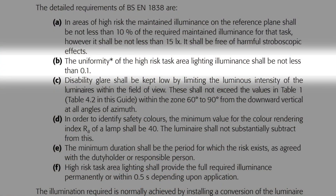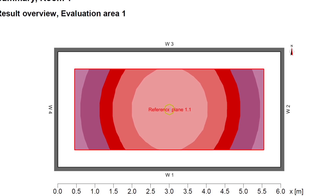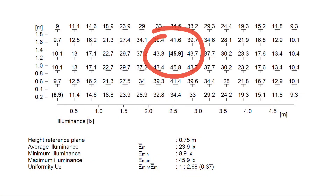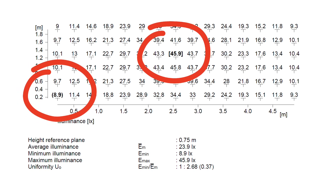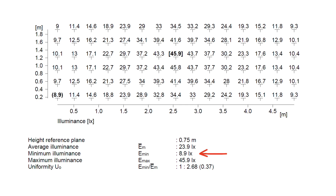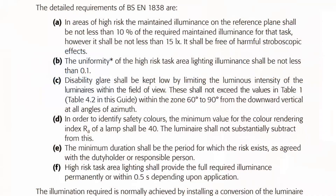The next requirement, indent B, states that the uniformity of the high risk task area lighting illuminance shall be not less than 0.1. Uniformity is all about how evenly spread the light is. A single light source will create a bright spot directly below it that drops off with distance; multiple sources create a more complex picture. This type of uniformity is found by taking the lowest illuminance value on the reference plane and dividing it by the average illuminance — giving a value between 0 and 1, with closer to 1 being better. A value of 0.1 should not be too difficult to achieve and is likely achievable with a single fitting.